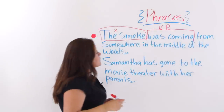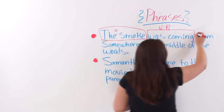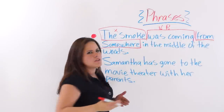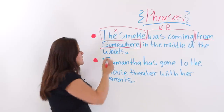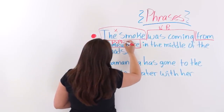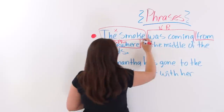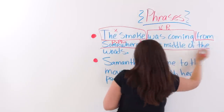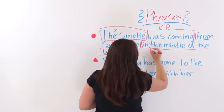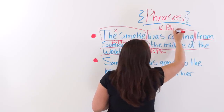From somewhere in the middle of the woods — we have two more phrases in this sentence. 'From somewhere': we have 'from', so we know that's a preposition, which makes 'from somewhere' a prepositional phrase. 'In the middle of the woods' is another prepositional phrase because we have the preposition 'in'. And 'was coming' is a verb phrase.